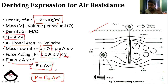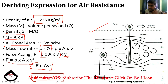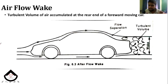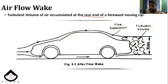The expression for pressure drag is derived using the drag coefficient. The airflow wake is the turbulent volume of air accumulated in the rear end of the forward-moving car. If we look at the front of the car, the air is moving and then at the back there is wake formation.